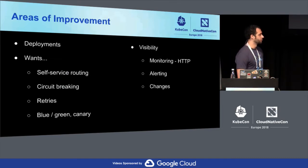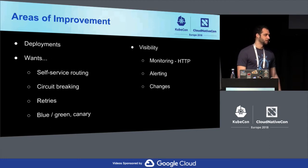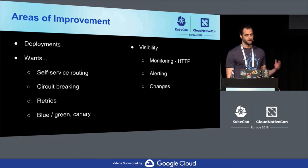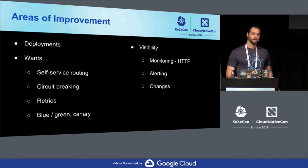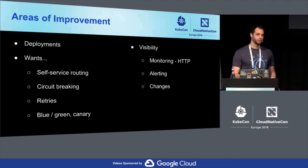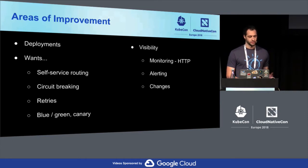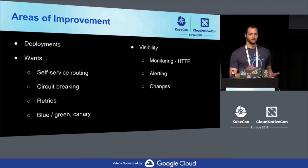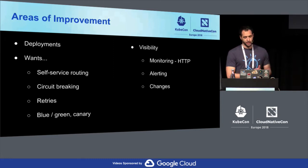Some of the areas of improvement we were looking for tooling to help us with: deployments — we wanted to get rid of those completely for routing changes and make it so teams could self-service routing. They could add routes at will based on validation. Teams could switch routing quickly in production if they added new versions. We also wanted to add circuit breaking, retries, and blue-green capabilities to developers so they could try canaries and blue-green testing.